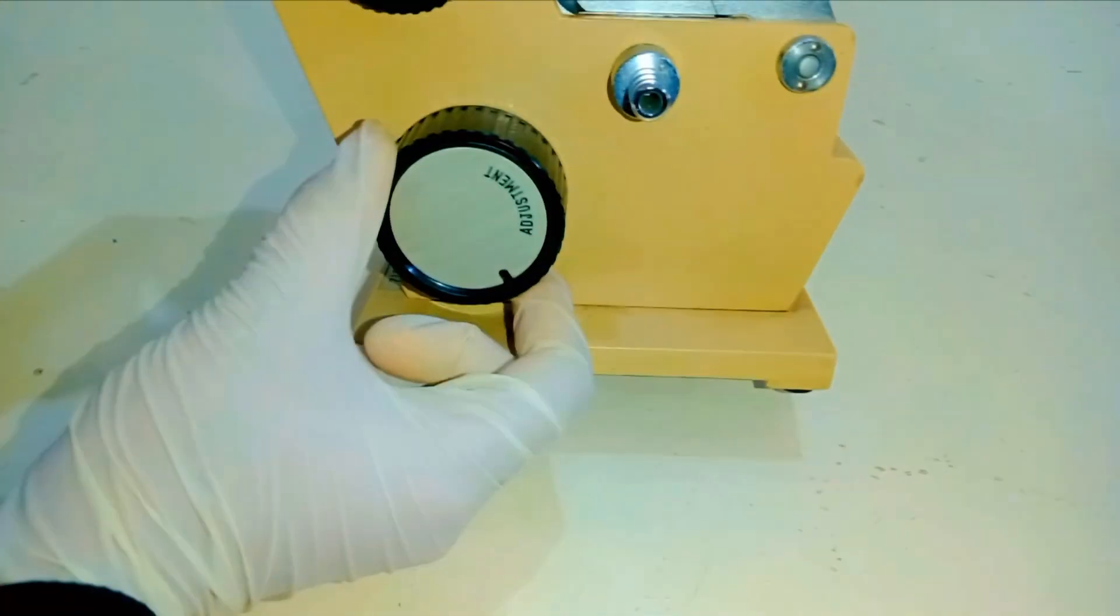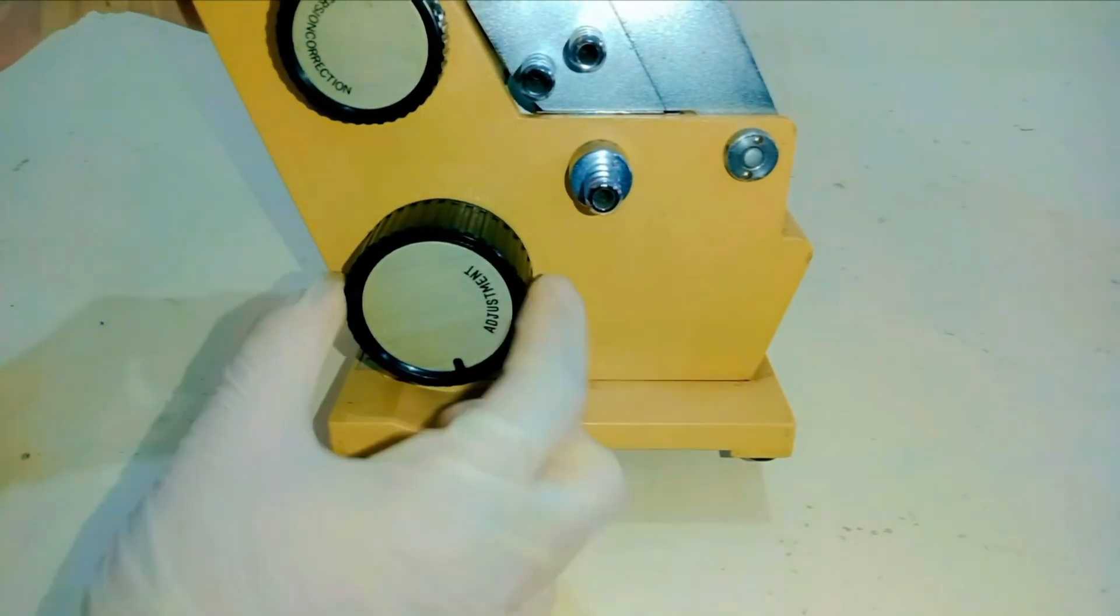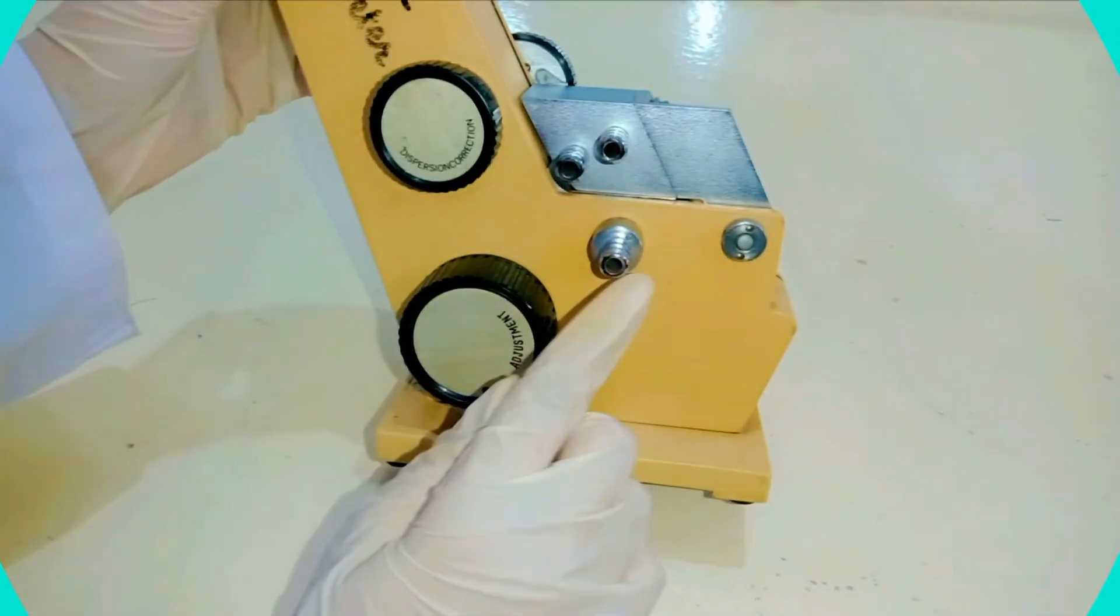Below this dispersion correction knob, we have an adjustment knob, also called the refractive index hand wheel. As the name shows, it's something related to refractive index. As we rotate this knob, the reading on the green scale as well as the position of shadow boundary changes. Using this knob, we will adjust the shadow boundary at the center of crosshair. Once set, we will read the scale. The scale is calibrated and each division is at a difference of 0.0005.